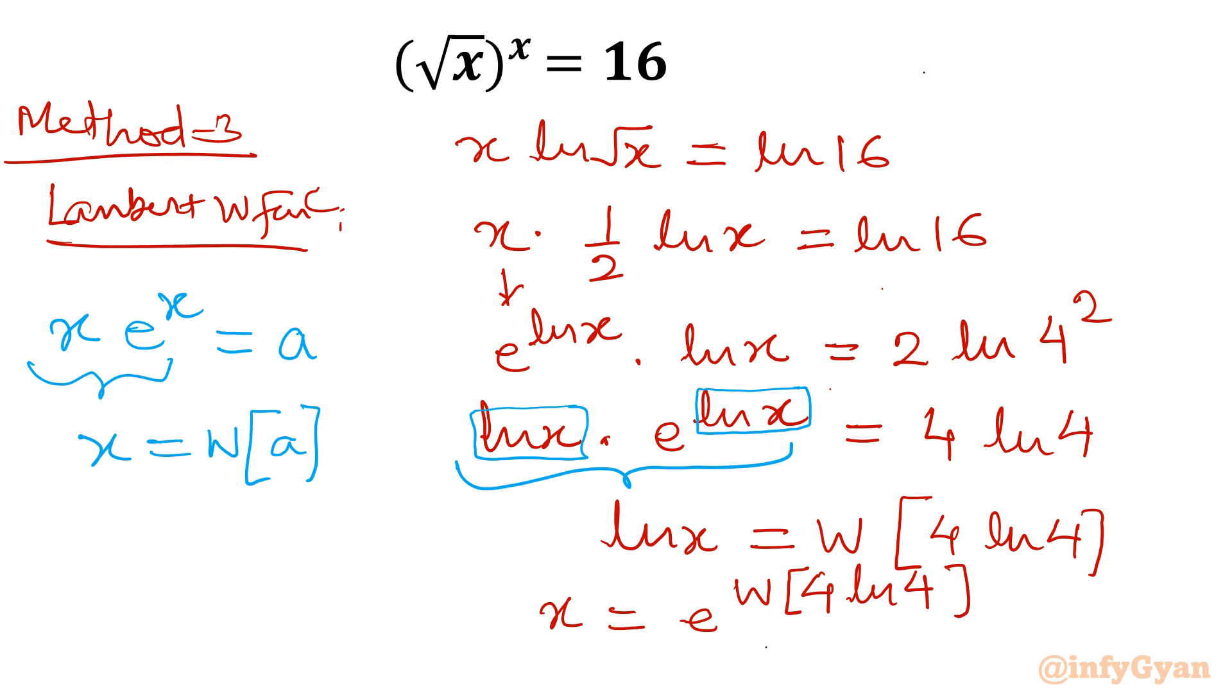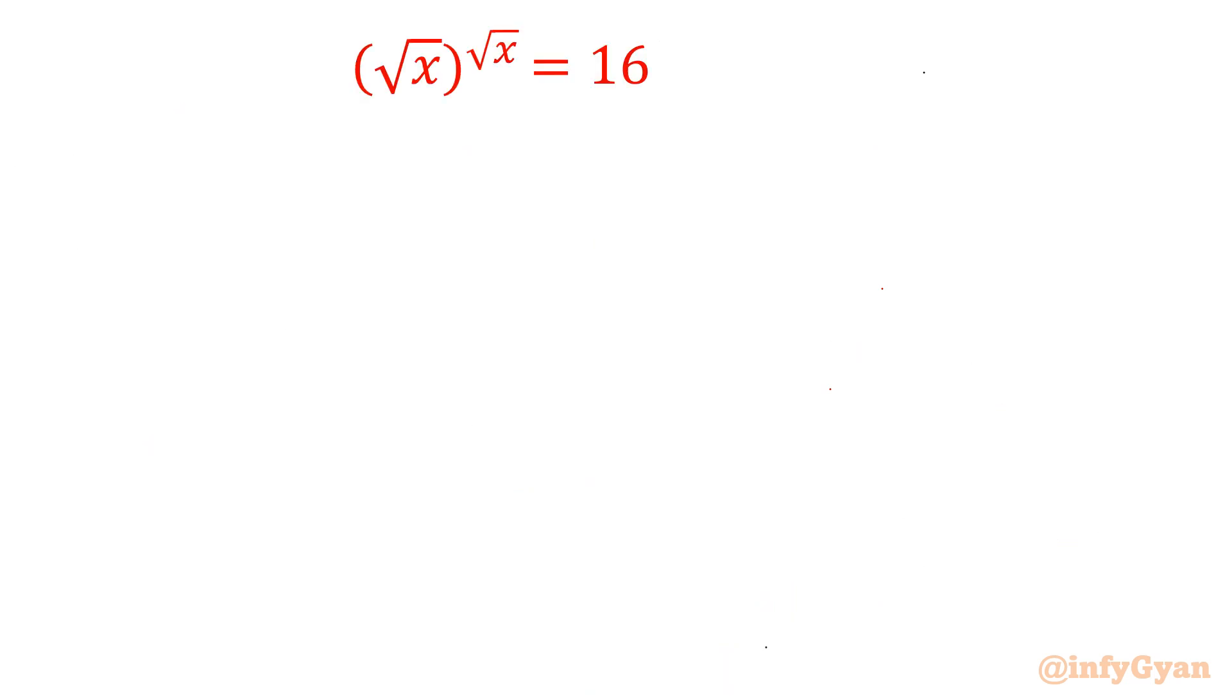And x must be equal to, write in exponential form, e power W function 4 ln 4. Using Wolfram Alpha you can conclude x equal to 4. If you don't want to apply any exponent or exponent properties or logarithmic or logarithmic properties log function anything, then you can go directly for Lambert W. Now if exponent I am replacing with root x, what you will do. If you can find out, then how you will solve this problem.